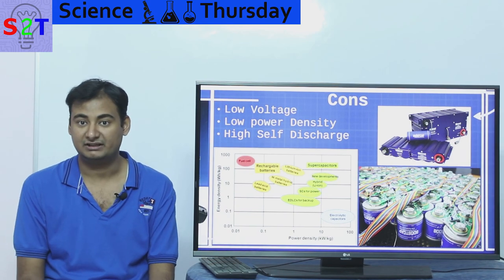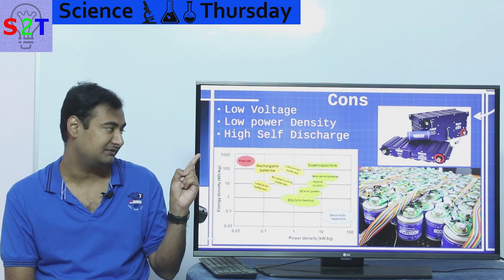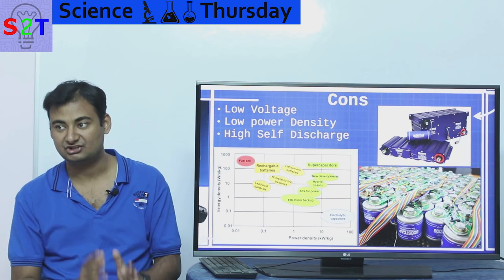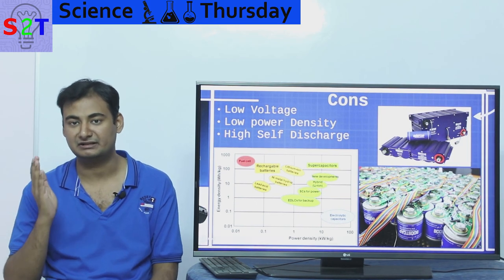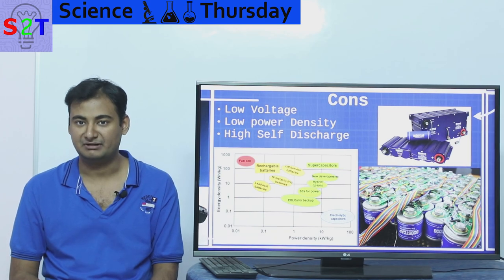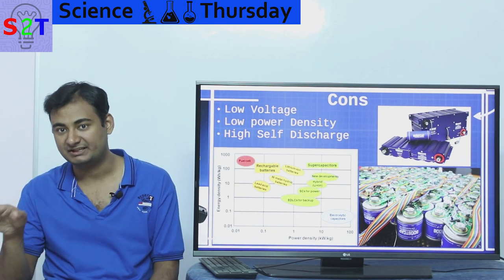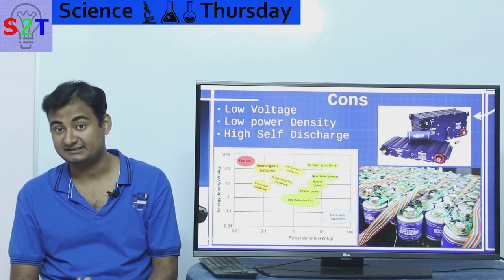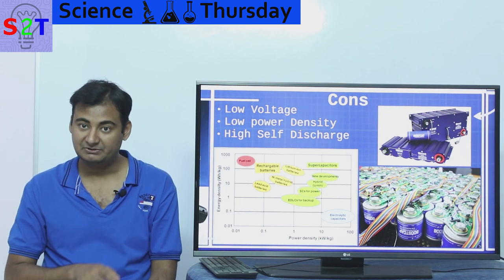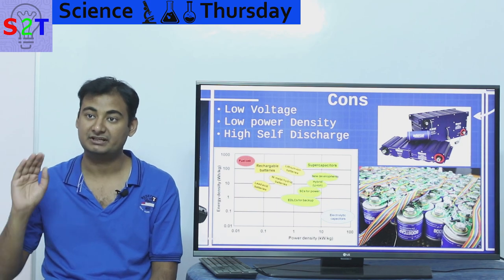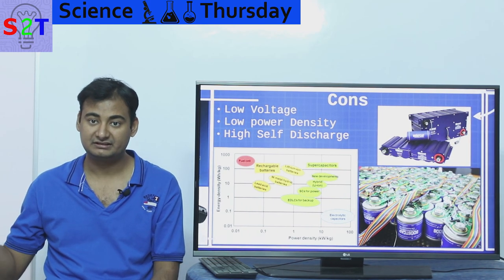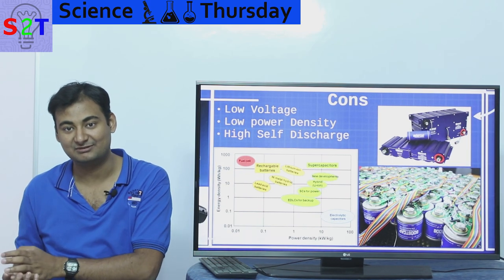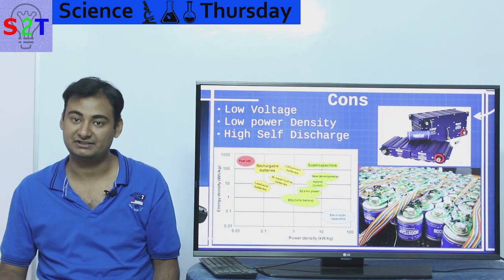The biggest hurdle is high self-discharge. If you charge any battery — lead acid, nickel cadmium, lithium ion — it discharges slowly over time, perhaps over a month to a year. Super capacitors discharge much faster: in days. That is very crucial. If you want to use them practically, you still need a small rechargeable battery alongside just to slow down the self-discharge rate.